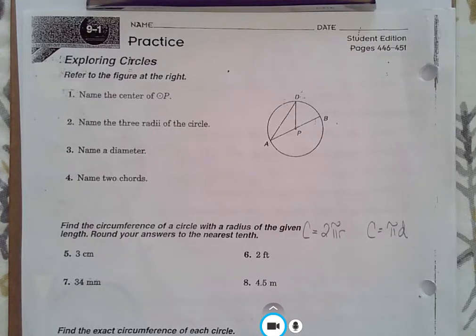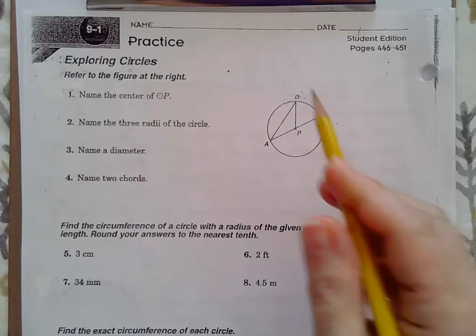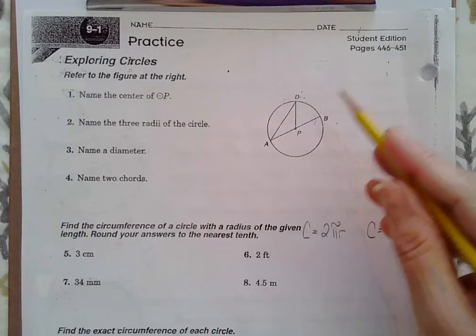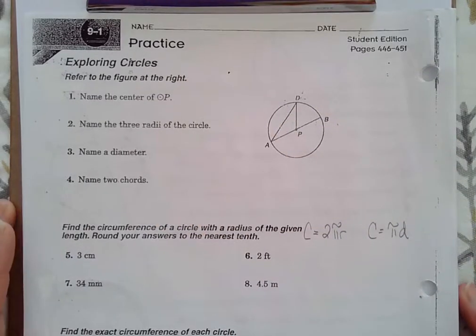Now we're going to do some examples for circumference and area of circles. First, I'd like to begin with a little bit of a review of our definitions and naming the different segments in a circle.